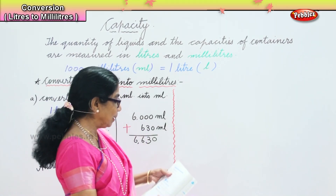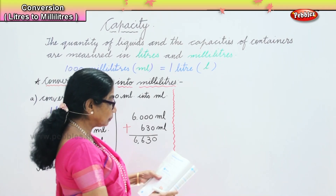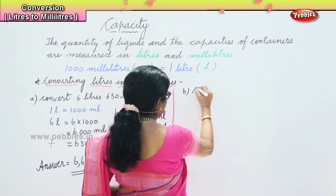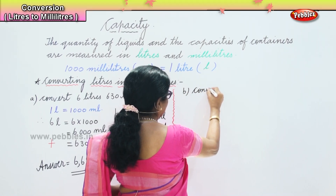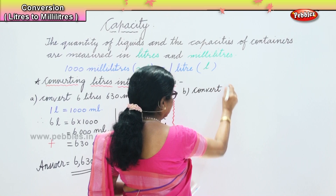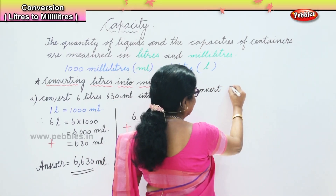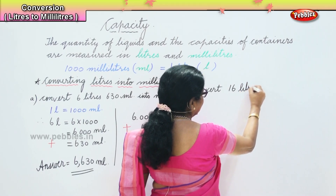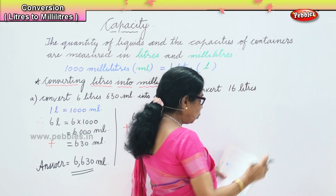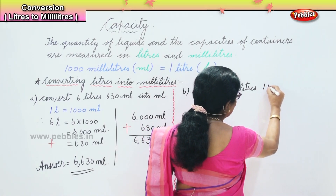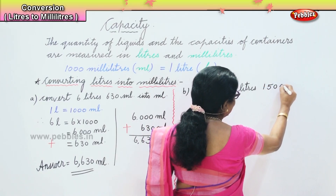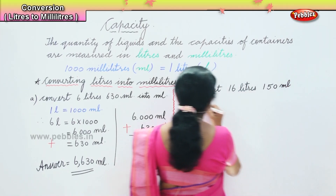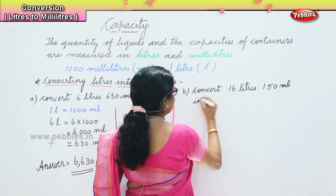Now shall we work out one more sum? Next one — convert 16 liters, one hundred and fifty milliliters into milliliters.